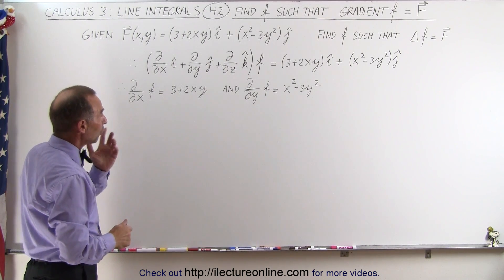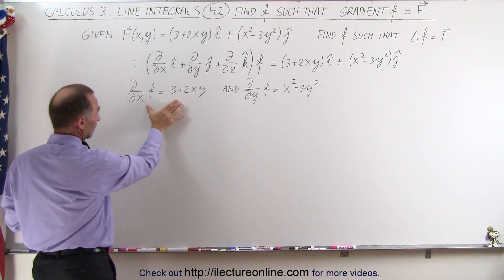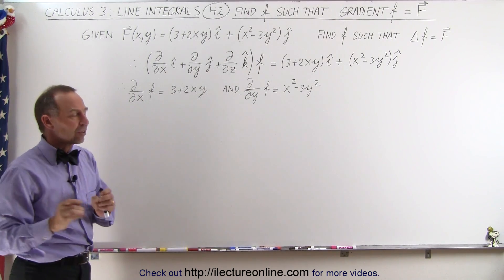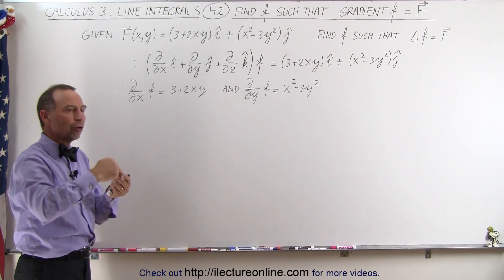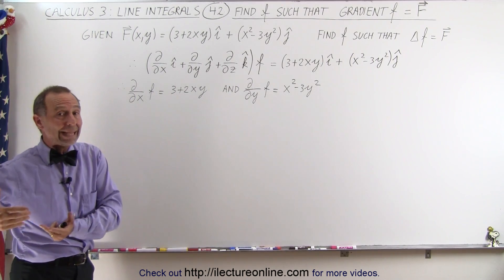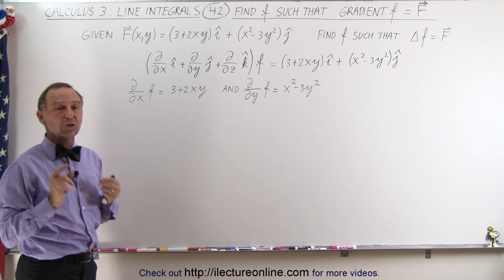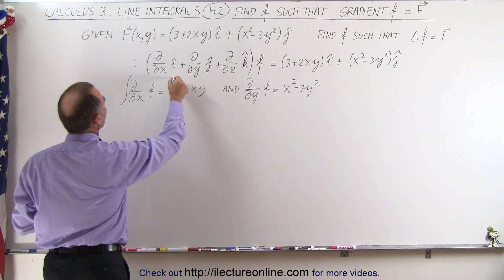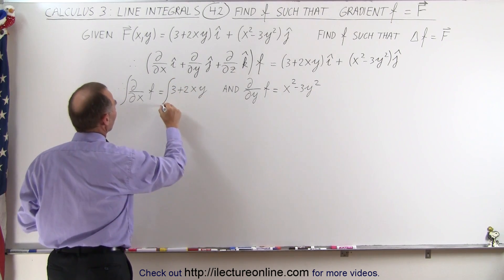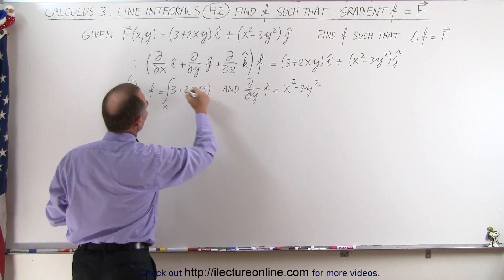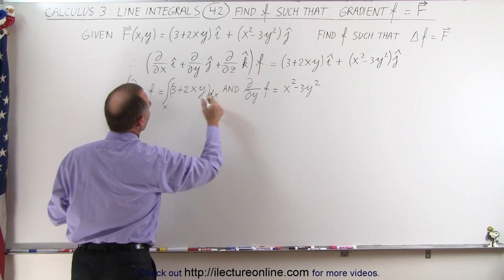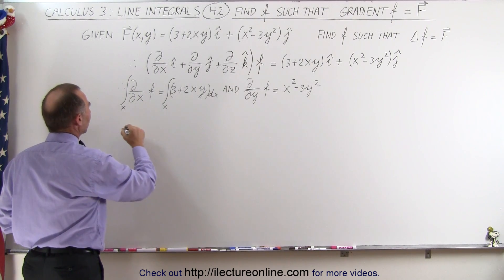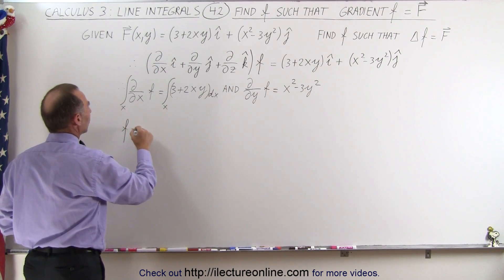What we can do is take this quantity and take the integral of both sides only with respect to x. That's basically the reverse of a partial derivative with respect to x. We take the integral with respect to x only, so we take the integral of this with respect to x and the integral of the other side with respect to x, with a dx so that we take the partial derivative.